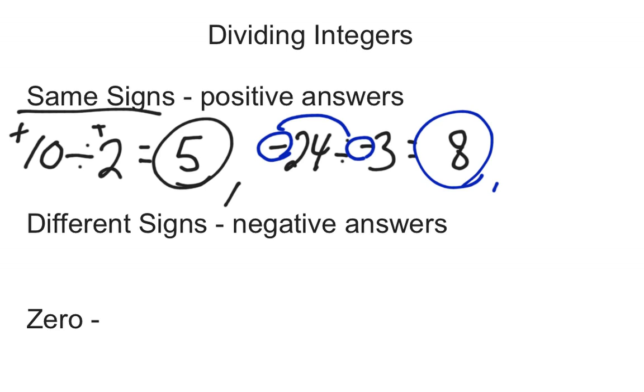And they could even give you something where we're going to put it to you in fraction form, something like negative 15 divided by negative 3. Well, 15 divided by 3 is 5. And again, since they're both negative, negative 15, negative 3, the signs are the same. Positive answer. We get a positive 5.